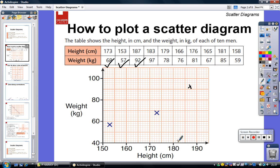183.97 is the next point I'm trying to plot, which will be here. 179.78 will be here. 166.76. 176.81 will be here.